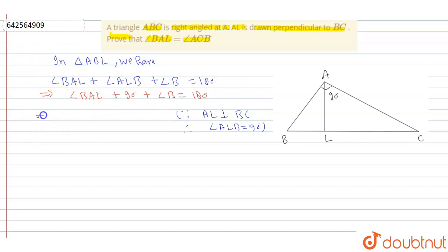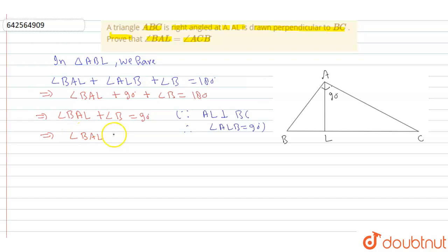So angle BAL plus angle B is equal to 90 degrees, or we can write angle BAL is equal to 90 degrees minus angle B. That is equation number 1.